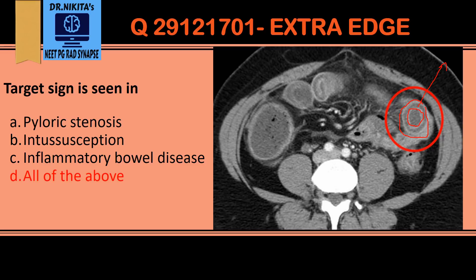Also remember that the target sign is seen in appendicitis as well, for the same reason — there is wall thickening, just like in bowel inflammation or pyloric stenosis.